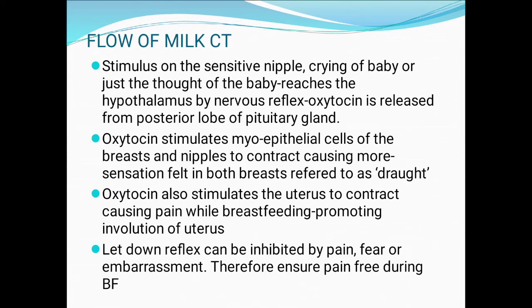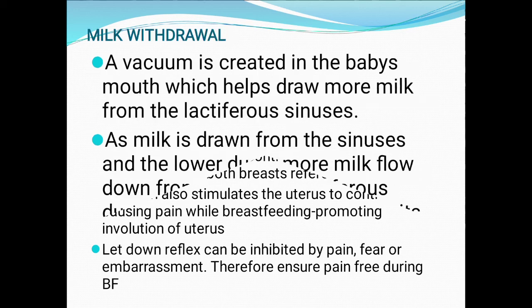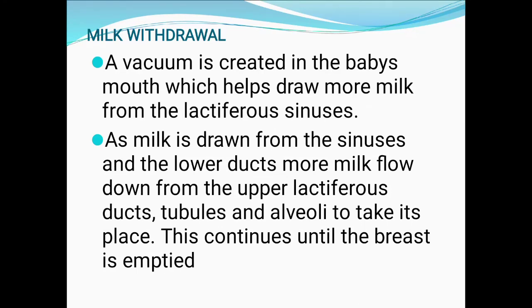Stimulus on the sensitive nipples — crying of the baby or just the thought of the baby — reaches the hypothalamus by nerve reflex. Oxytocin is released from the posterior lobe of the pituitary gland. Oxytocin stimulates myoepithelial cells of the breast and nipple to contract, causing a sensation felt in both breasts — referred to as the let-down reflex. Oxytocin also stimulates the uterus to contract, causing pain while breastfeeding and promoting involution of the uterus.